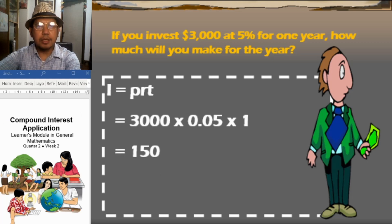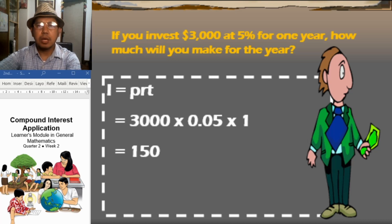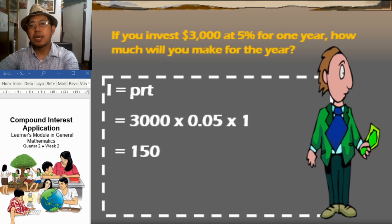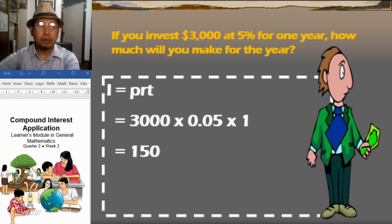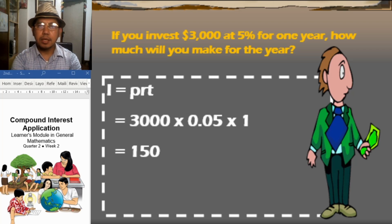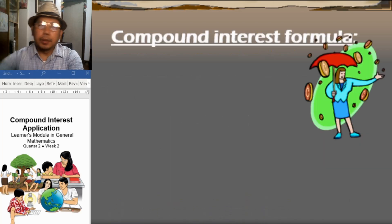That gives you $150. So the earning on your $3,000 in one year at 5% interest is $150. The final amount is $3,000 plus $150, which equals $3,150. That is how to compute interest using the simple interest formula.